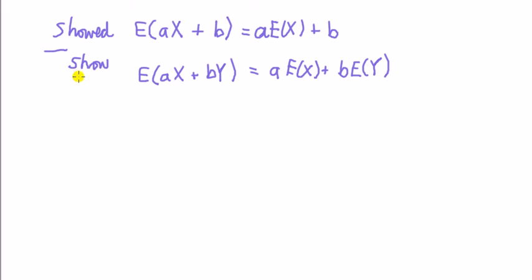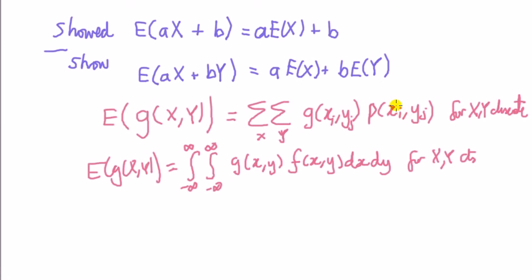Recall that the word proof is same as the word show. Now for this proof we need the following result, and it's a similar result to the case for just one variable. The expected value of a function g, which depends on the two variables X and Y, is equal to double summation, so summing over X and Y, summing over both variables, in other words,